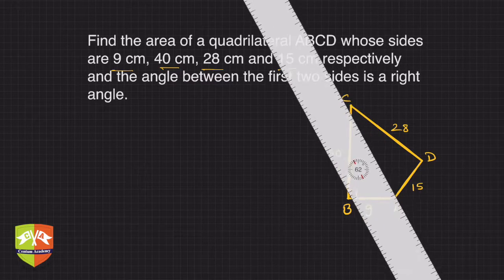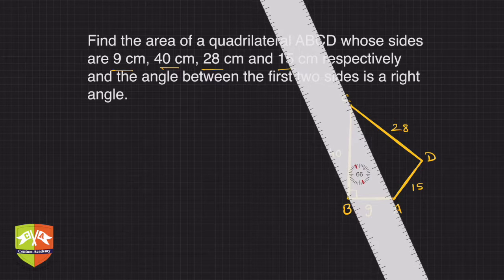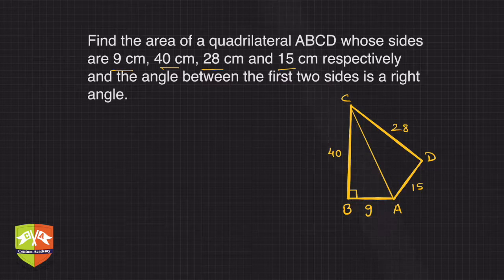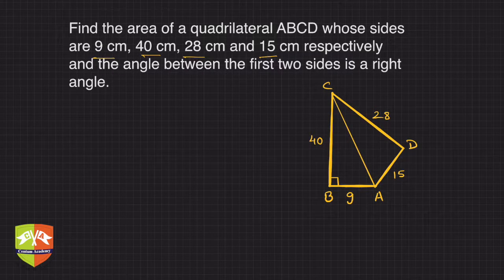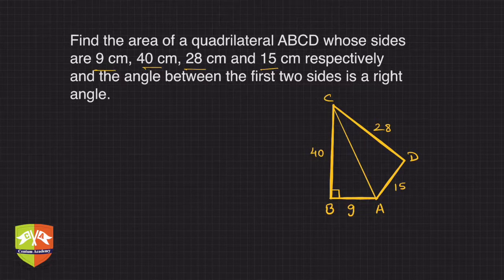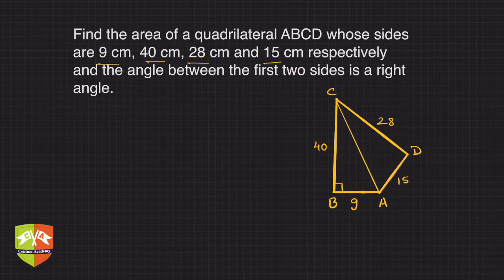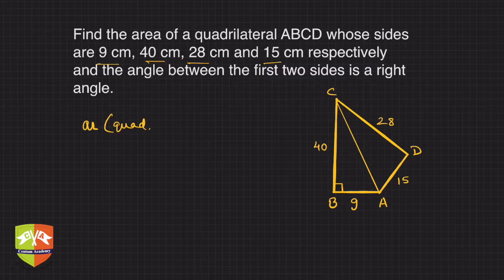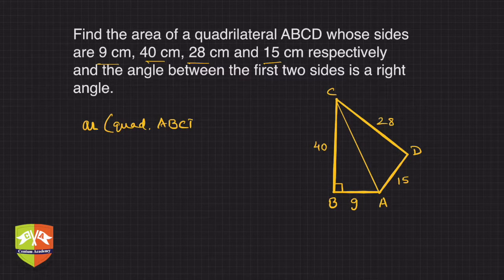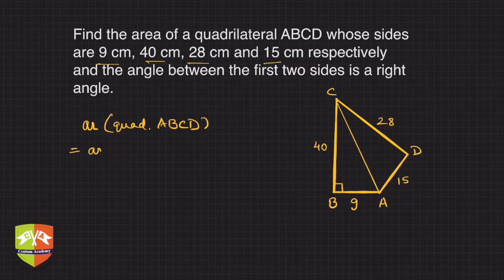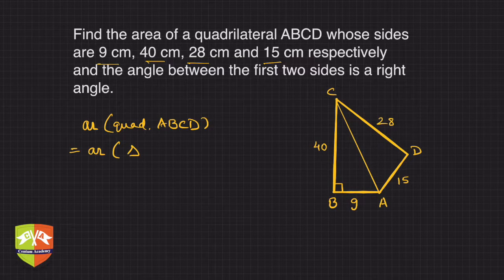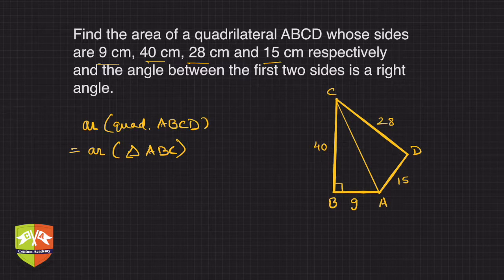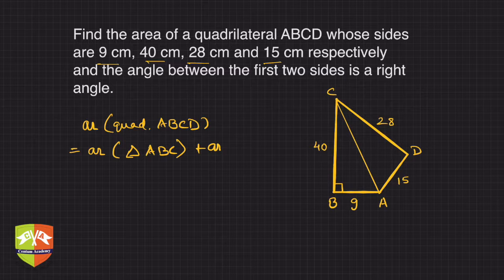Let's see what I mean. I'm going to connect AC. Now what I need to do is simply find the areas of both triangles and add them. So I can write: area of quadrilateral ABCD equals area of triangle ABC, which happens to be a right triangle, plus area of triangle ACD.